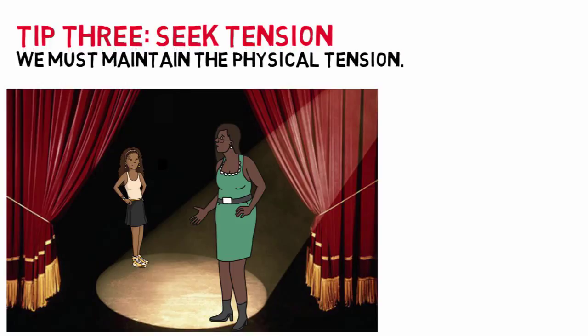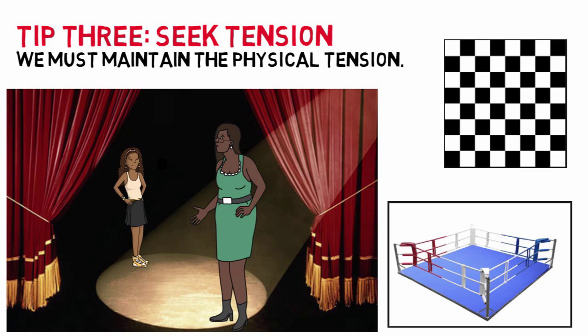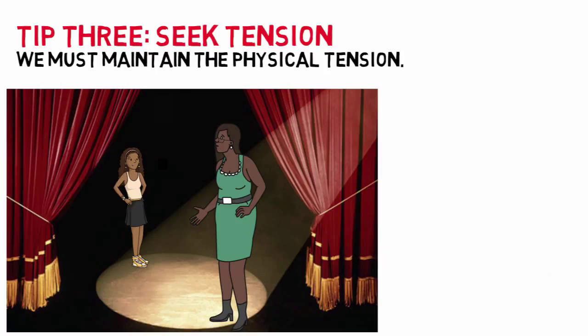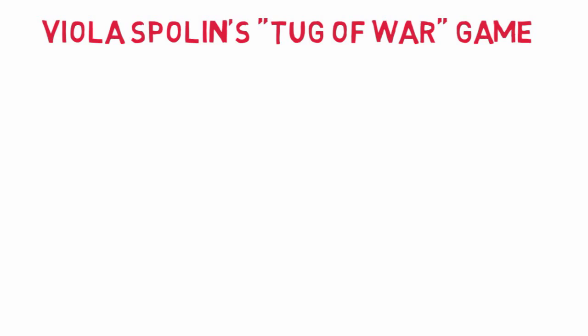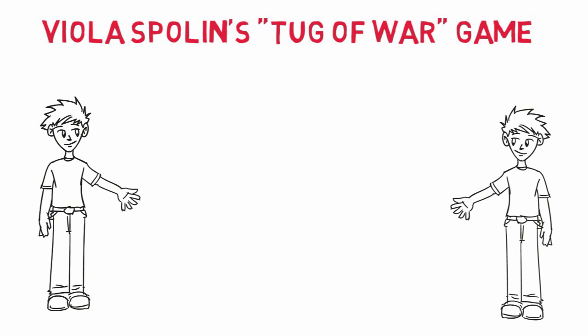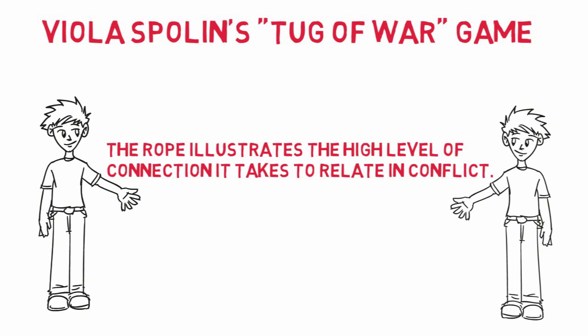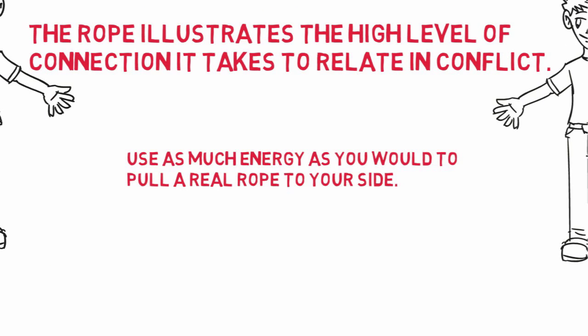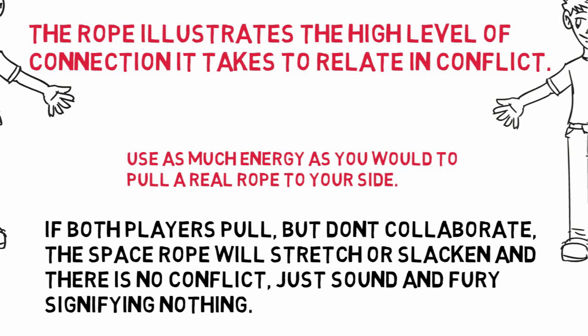Another common relationship trap is when actors view their scene partners as an opponent on the other side of a boxing ring or a chessboard. While this might encourage the fighting spirit, it may also overlook the very important collaborative role of relating with your partner while in conflict. To explore working together to create tension, play Viola Spolin's tug-of-war game. Put an invisible space rope between you and your partner. The rope illustrates the high level of connection it takes to relate in conflict. Use as much energy as you would to pull a real rope to your side. If both players pull but don't collaborate, the space rope will stretch or slacken, and there is no conflict.